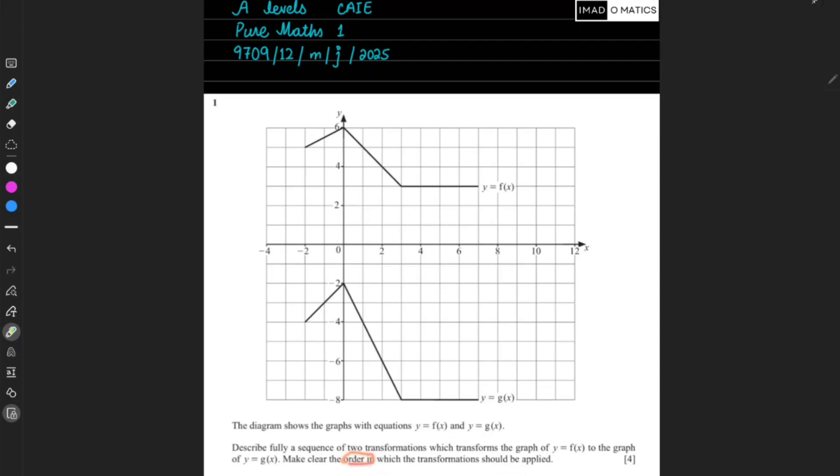Make clear the order in which the transformation should have been applied. There are two transformations and we need to tell the order clearly. First of all, we have to analyze it in all ways.